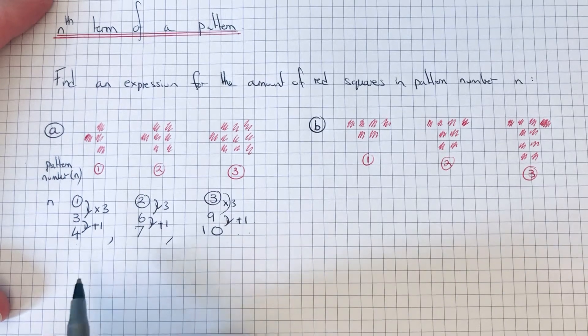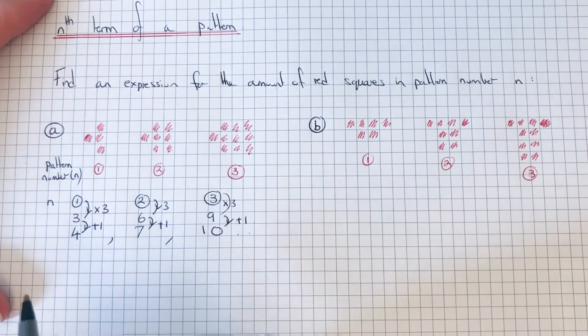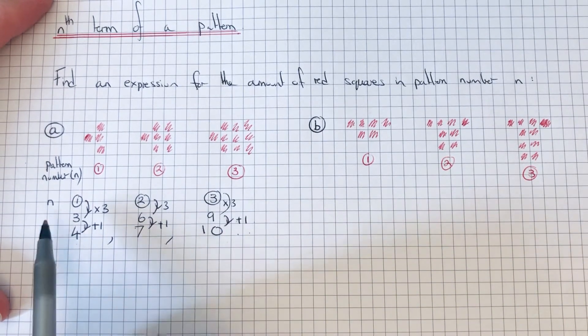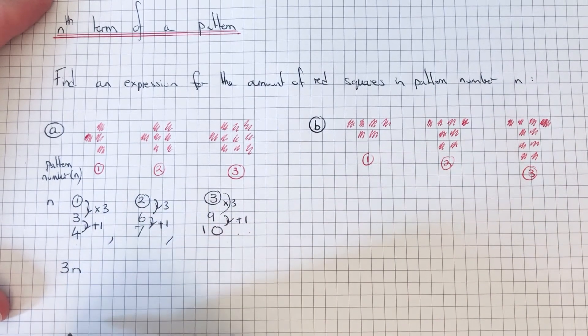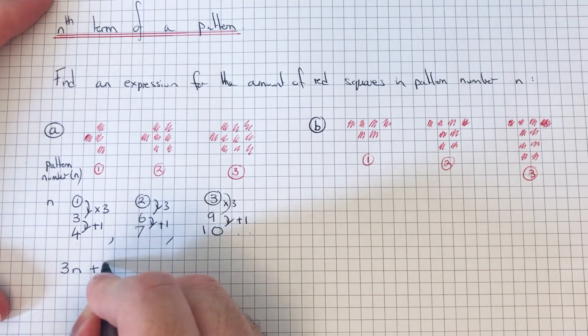We just need to write this down in algebra. So we've multiplied the pattern number n by 3, so that would be written down as 3n, and then we just need to add one.